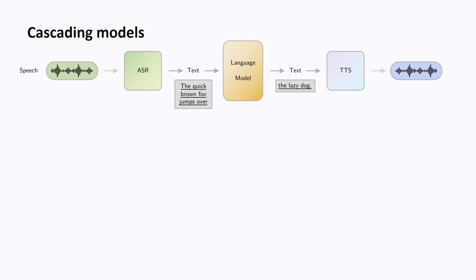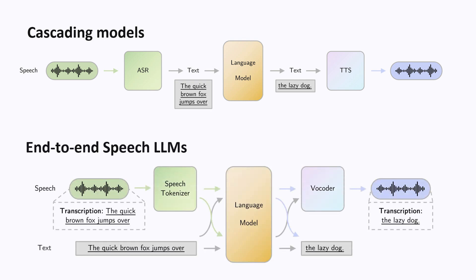But there are advantages to end-to-end models — models that do all of these steps without using text as an intermediate representation. My name is Bai. I'm a machine learning engineer and a PhD in natural language processing, and in this video I will explain the architecture of end-to-end speech LLMs.